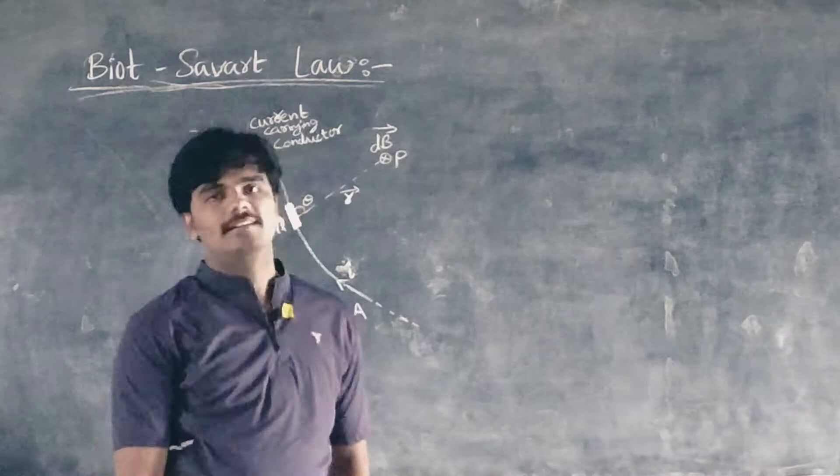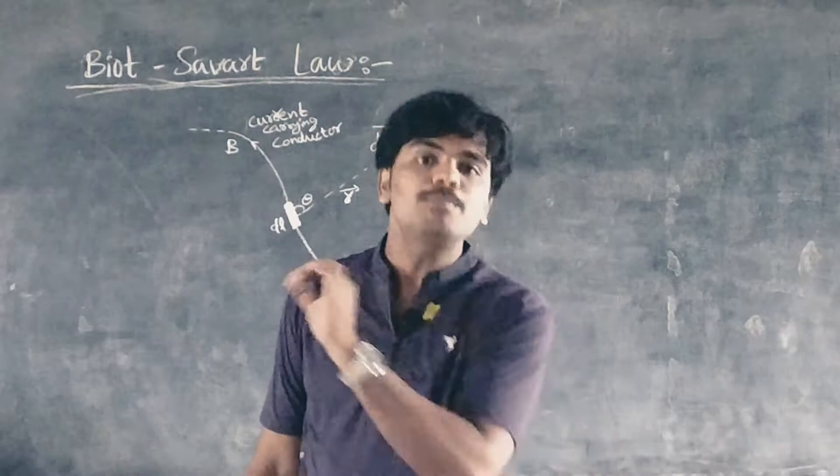According to Biot-Savart, the field B at any point can be computed by dividing the conductor into a number of short current elements like this.